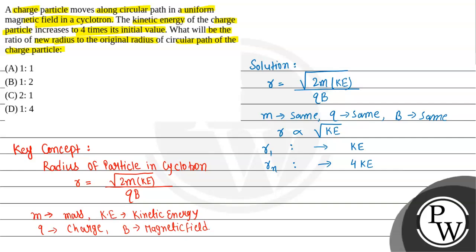Here we can write r1 is to rn, so this will be square root of KE divided by 4 times of KE. So this will be square root of 1 divided by 4 which is equal to 1 divided by 2.